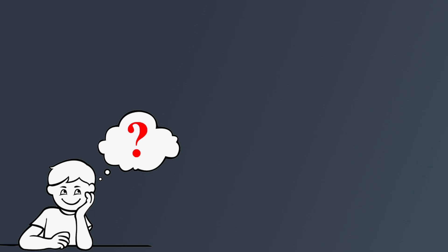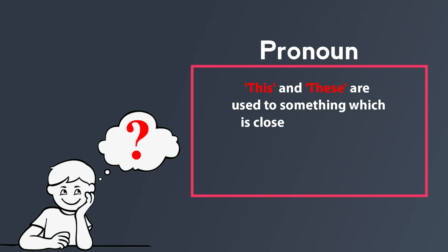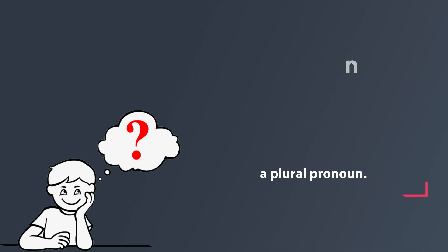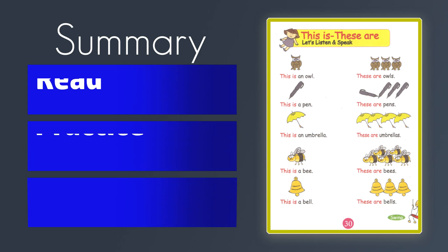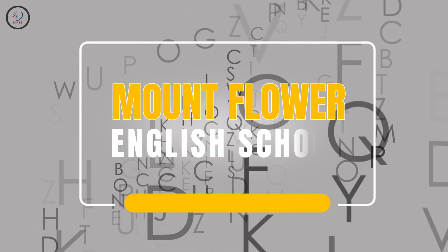Did you understand the difference between the pronouns 'this' and 'these' now? Both pronouns are used for something which is close at hand, right next to us, or easily referenced as close by. But the only difference is that 'this' is a singular pronoun, whereas 'these' is a plural pronoun. Okay kids, let me conclude for today. All of you should practice the lesson and finish your activities. Inshallah, we will meet you in the next class. Bye, thank you.